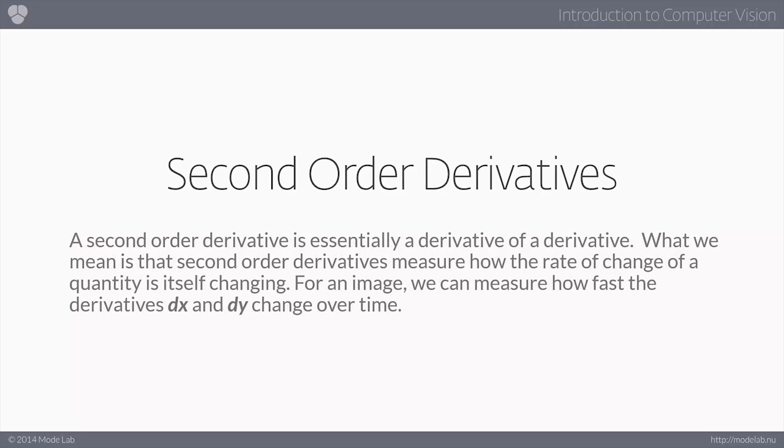What we're talking about now in adding time as a dimension, we're looking at second-order derivatives, or we have the ability to look at second-order derivatives, which is essentially a derivative of a derivative. If we think about our analogy of position and velocity, if a first-order derivative of position is velocity, that same analogy can be extended to a second-order derivative of velocity is acceleration.